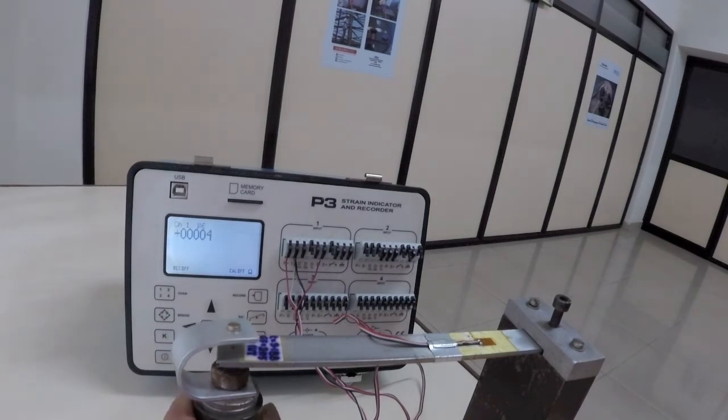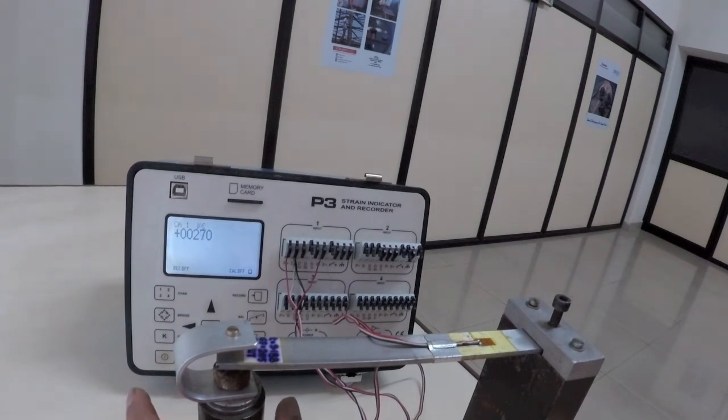This does not mean that the strain on the beam is doubled. It means that the Wheatstone bridge is giving double the output from the same strain because of the half bridge configuration.